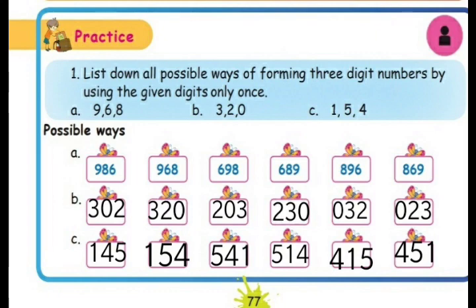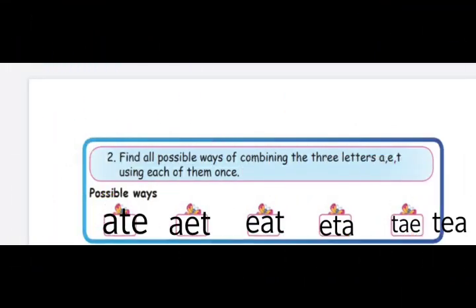Second question: find all possible ways of combining the three letters A, E, T, using each of them once. Keeping A as the first letter: A E T or A T E. Keeping E as the first letter: E A T or E T A. Keeping T as the first letter: T A E or T E A.